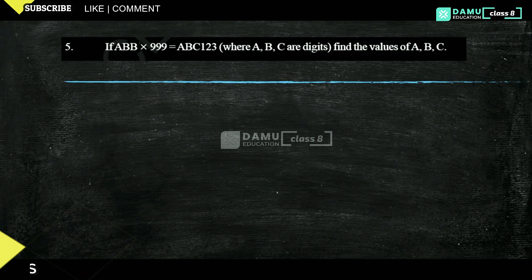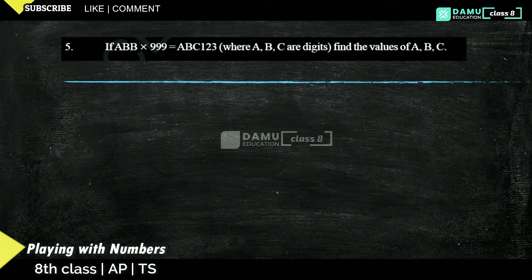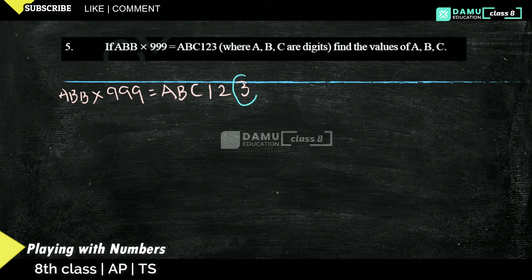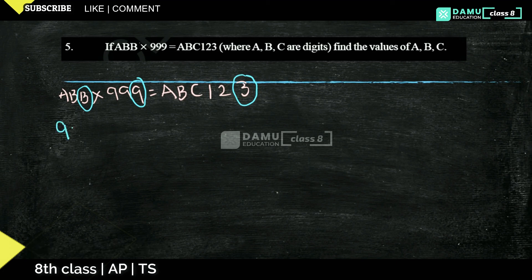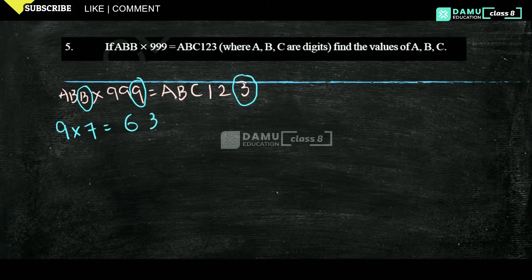Our last question: ABB into 999 equals ABC123. Check the unit digit — it's 3. What number times 9 gives unit digit 3? 9 into 7 is 63 — unit digit 3. So B equals 7 — confirmed.